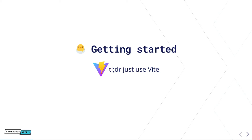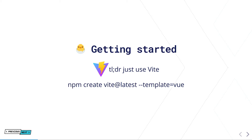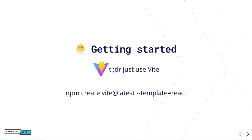Vite does NPM module resolving, pre-bundling, it's a dev server, does hot module reloading, and it supports TypeScript and JavaScript, JSX out of the box, CSS, PostCSS, CSS modules — many things. To get started with React, you would just run NPM create Vite latest with the template flag set to react for React, and template equals vue for Vue. So up to this point, we're pretty much the same.